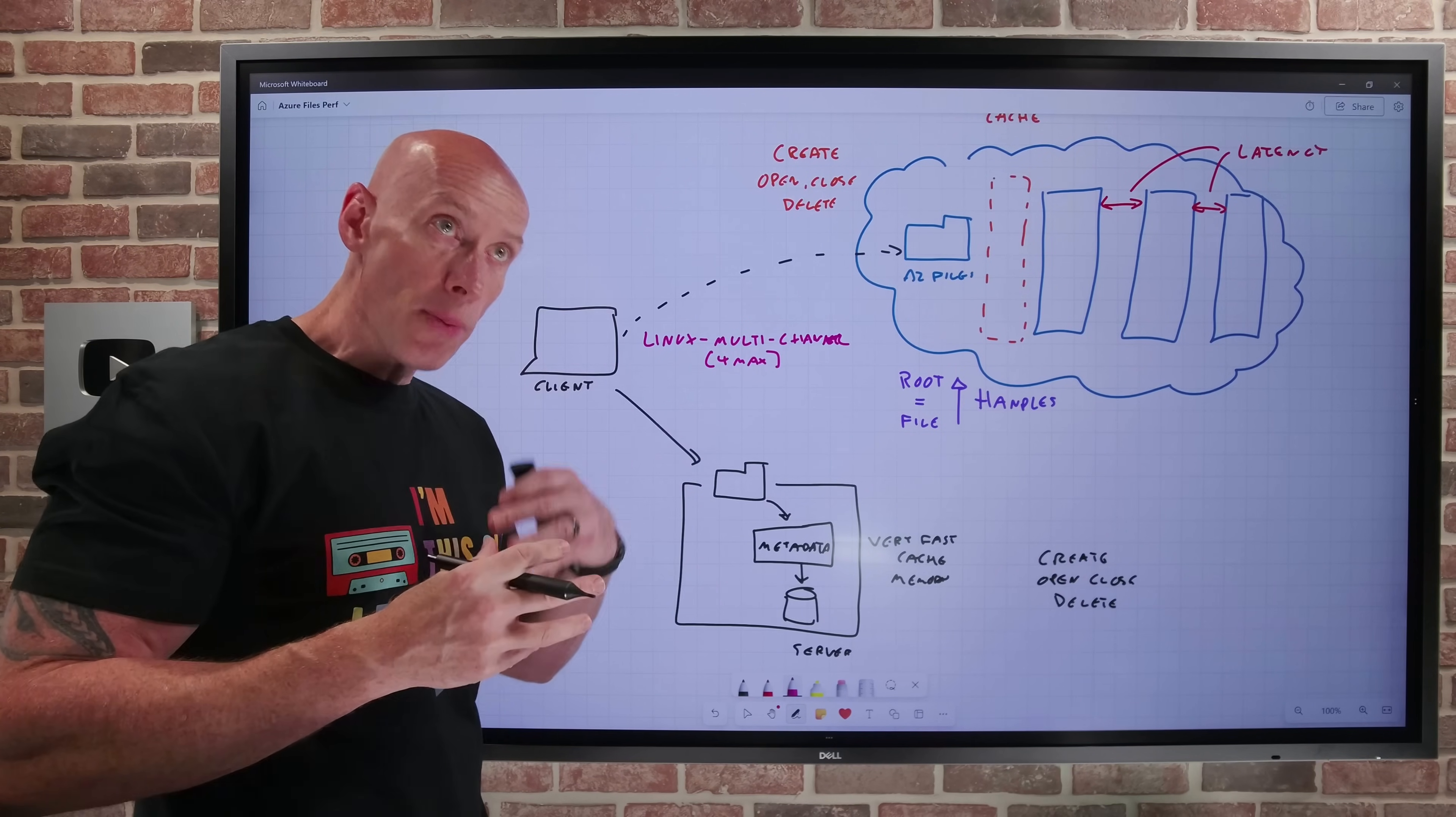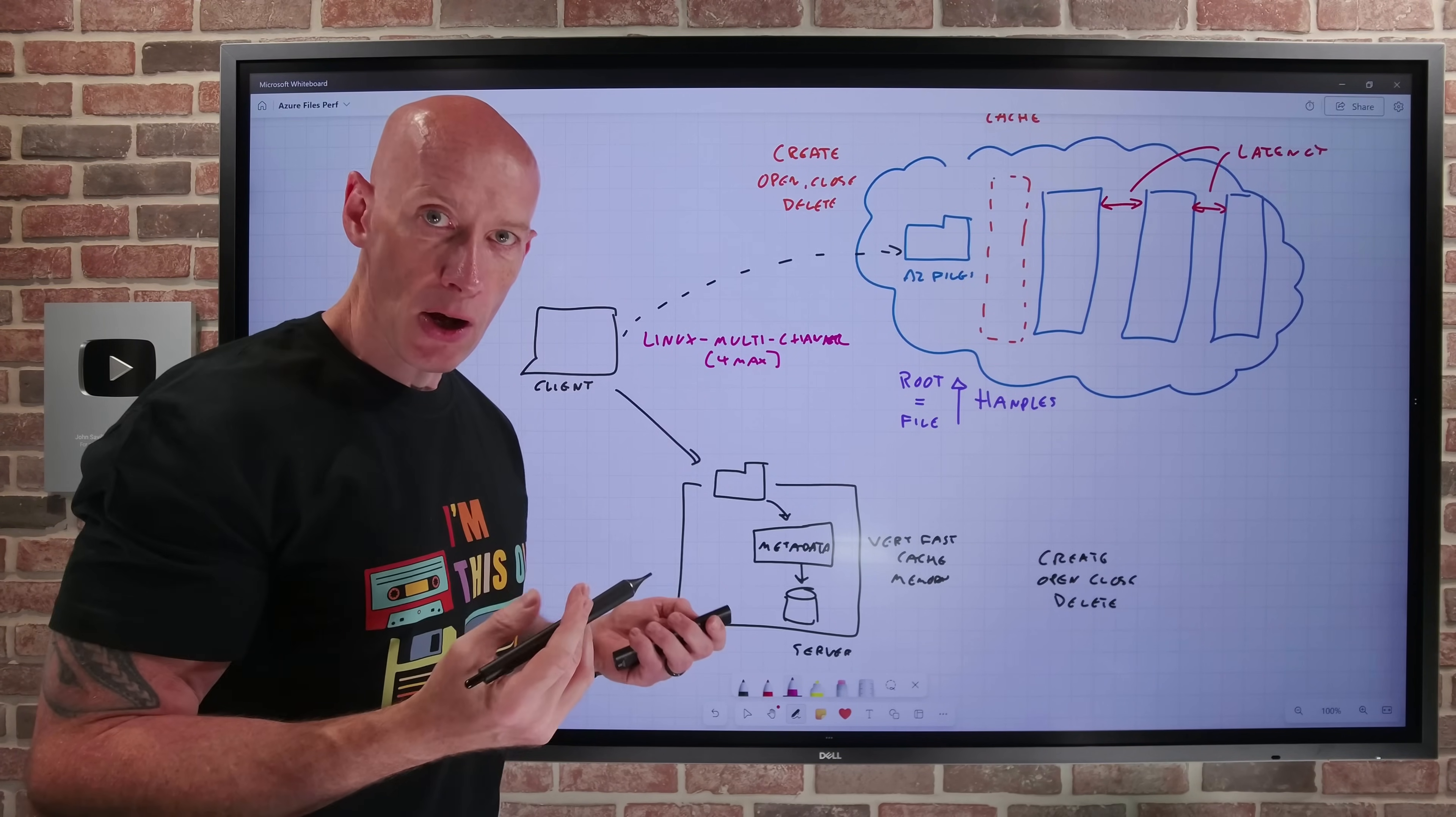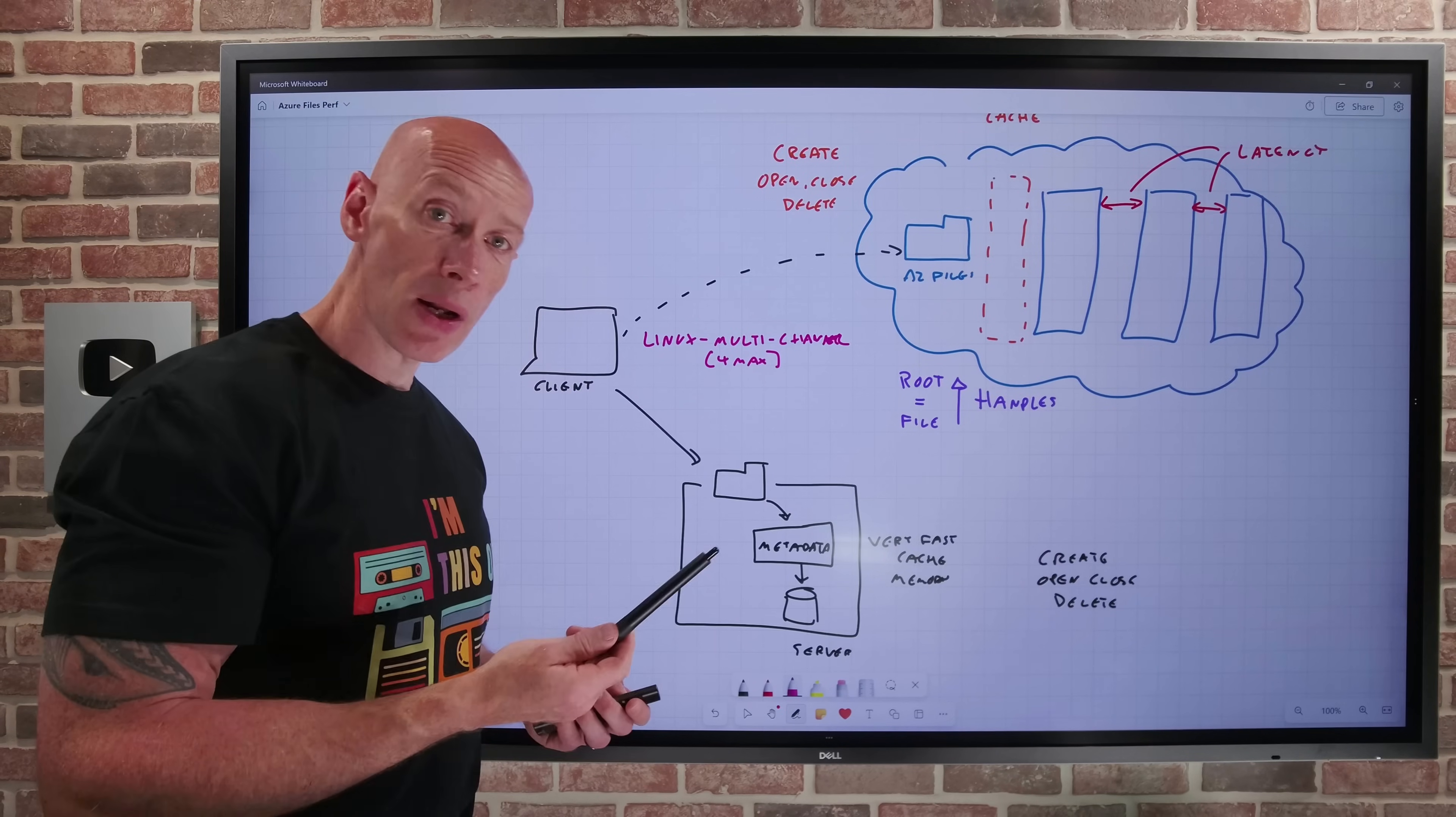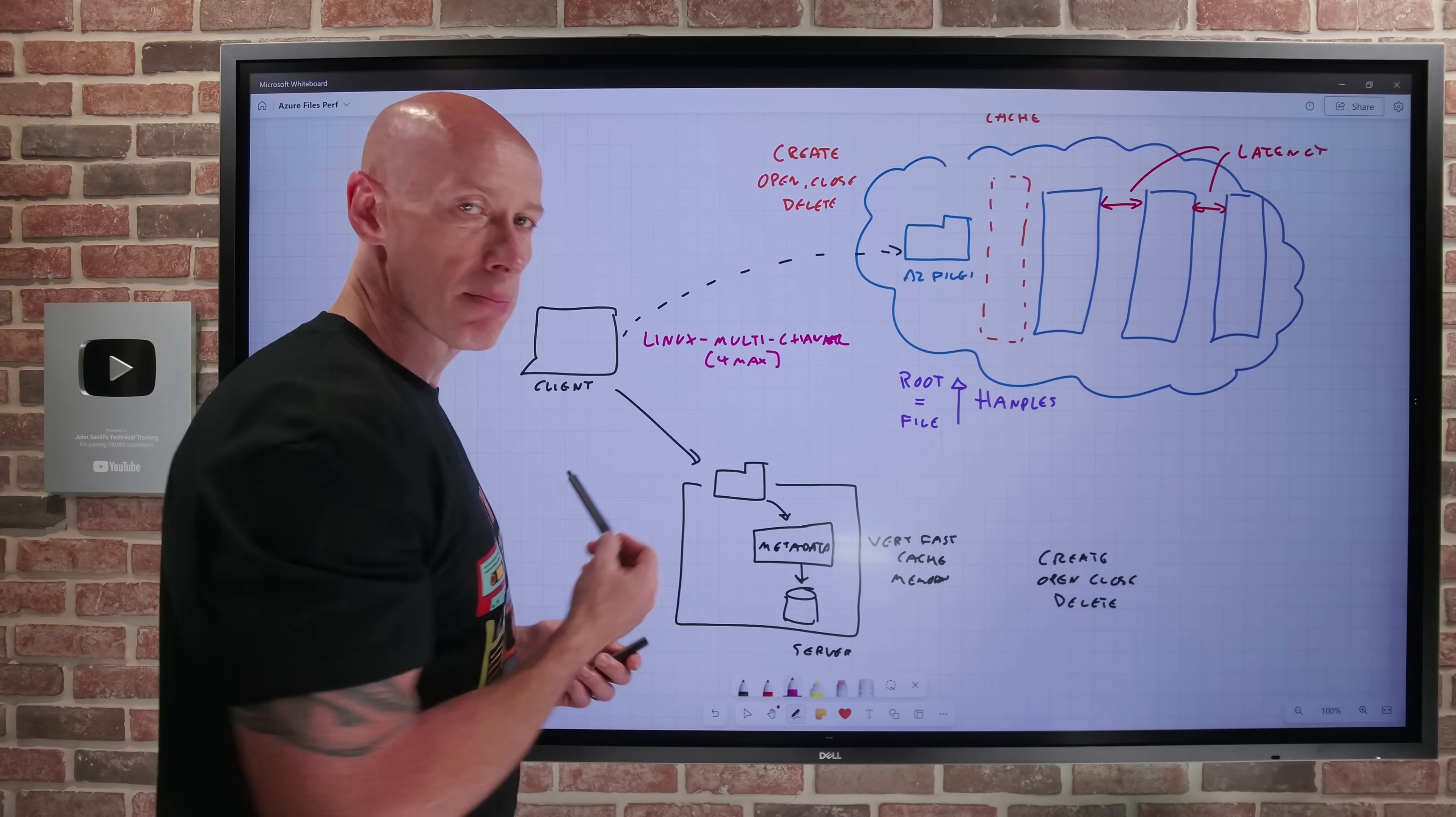So I get the combined IOPS, the throughput for that connection. So up from 20,000 IOPS to 80,000 IOPS per client. Now the client has to be capable of 80,000 IOPS. You would go and check the capabilities of your client, but that's now a possible capability for not just my Windows machines, but my Linux machines as well. And it does require a premium SSD file share today to be able to leverage that multi-channel.